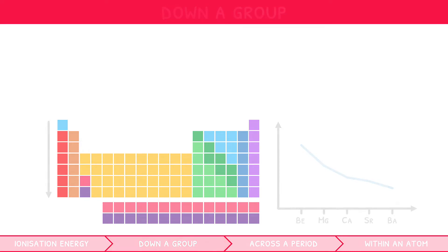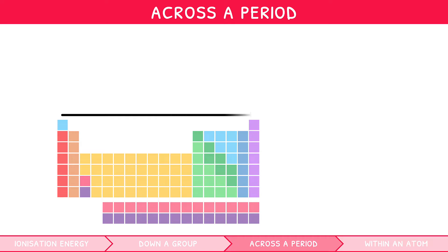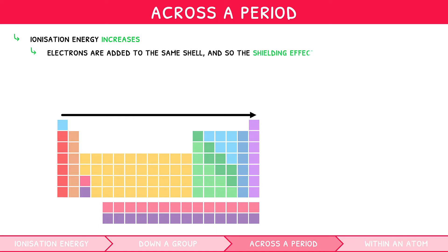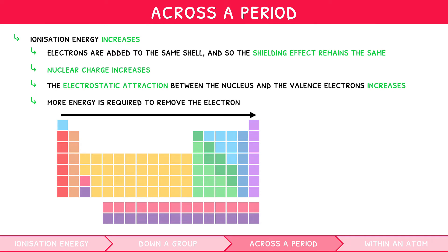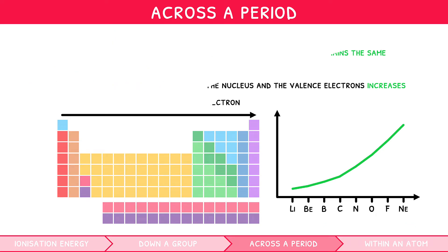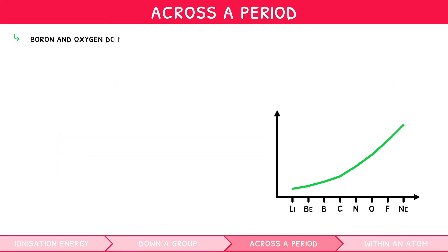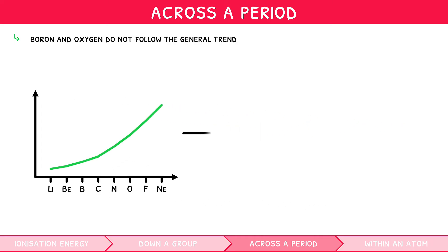So how does ionization energy change across a period? Across a period, ionization energy increases. This is because electrons are added to the same shell, so the shielding effect remains the same. However, the nuclear charge increases, therefore the electrostatic attraction between the nucleus and the valence electrons increases, meaning more energy is required to remove the electron. You would expect a graph of the ionization energies of period 2 to increase steadily. However, in reality, boron and oxygen do not follow the general trend.